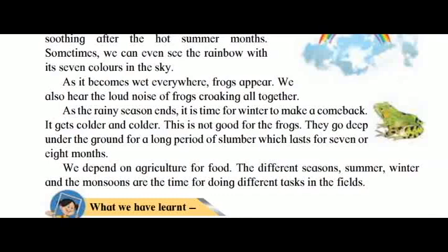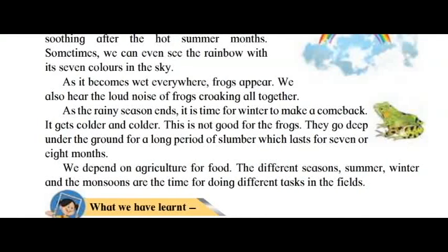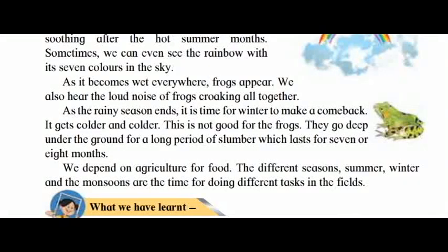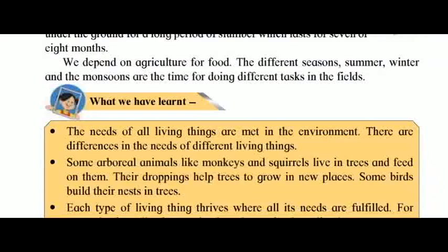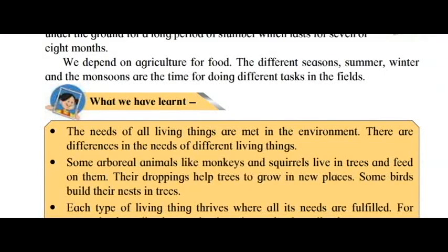As the rainy season ends, it is time for winter to make a comeback. It gets colder and colder, which is not good for the frogs. They go deep under the ground for a long period of slumber which lasts for seven or eight months. We depend on agriculture for food, and the different seasons — summer, winter and the monsoons — are the time for doing different tasks in the fields.